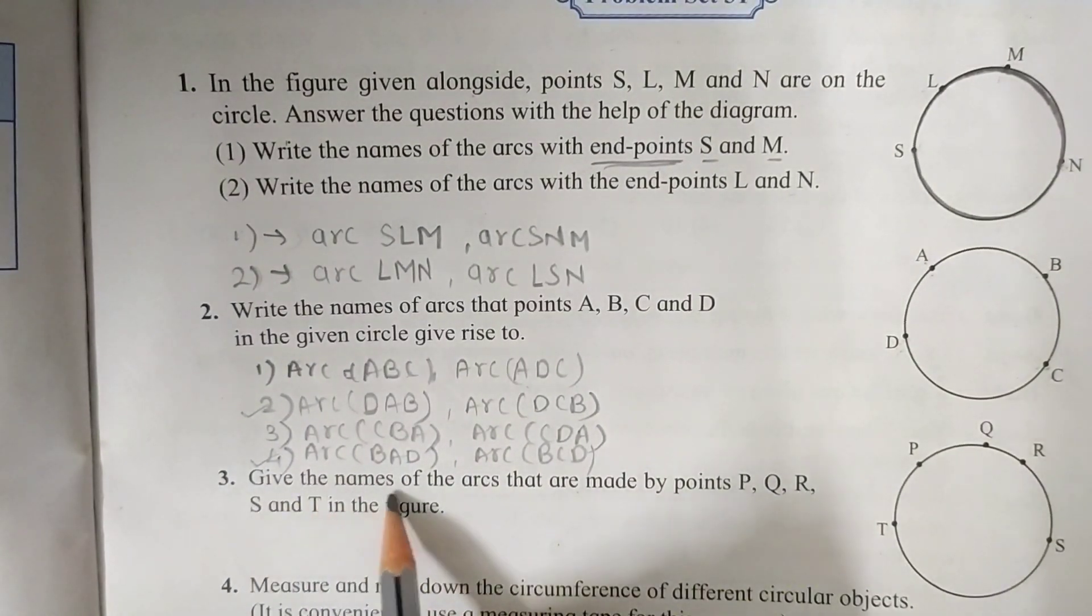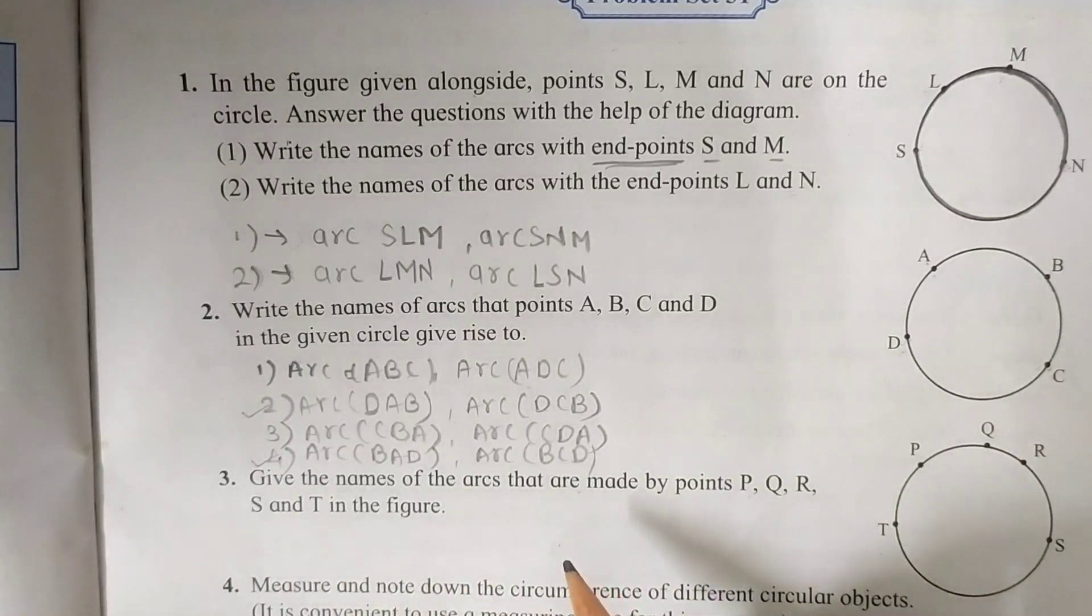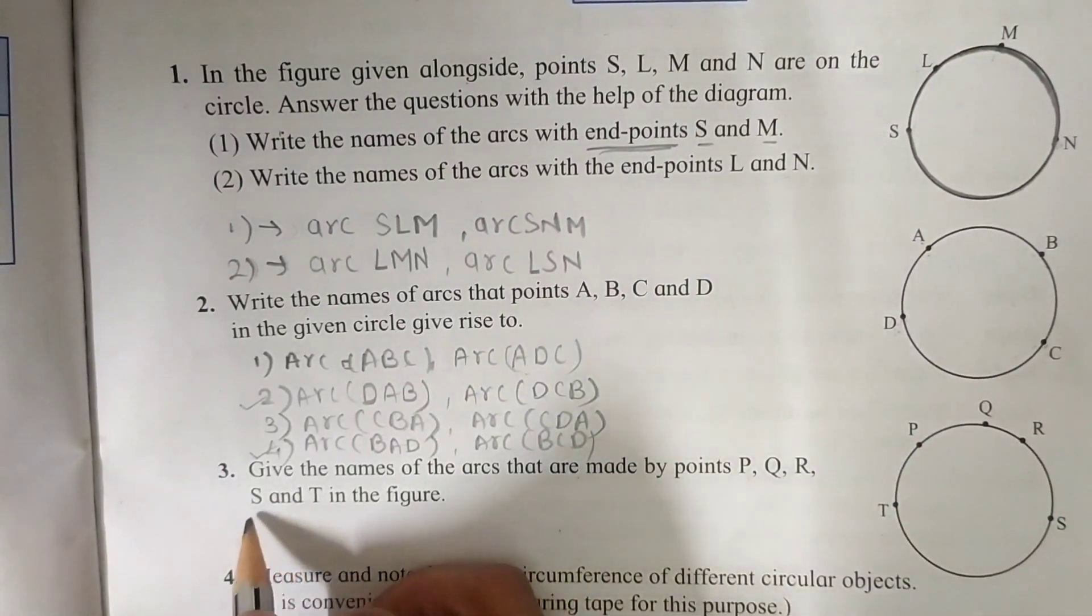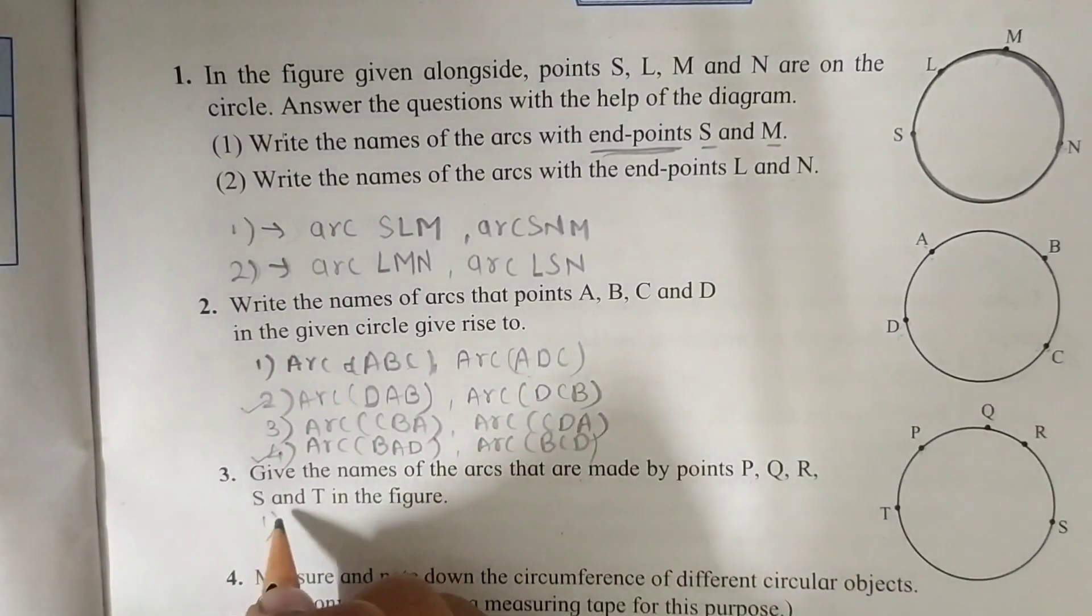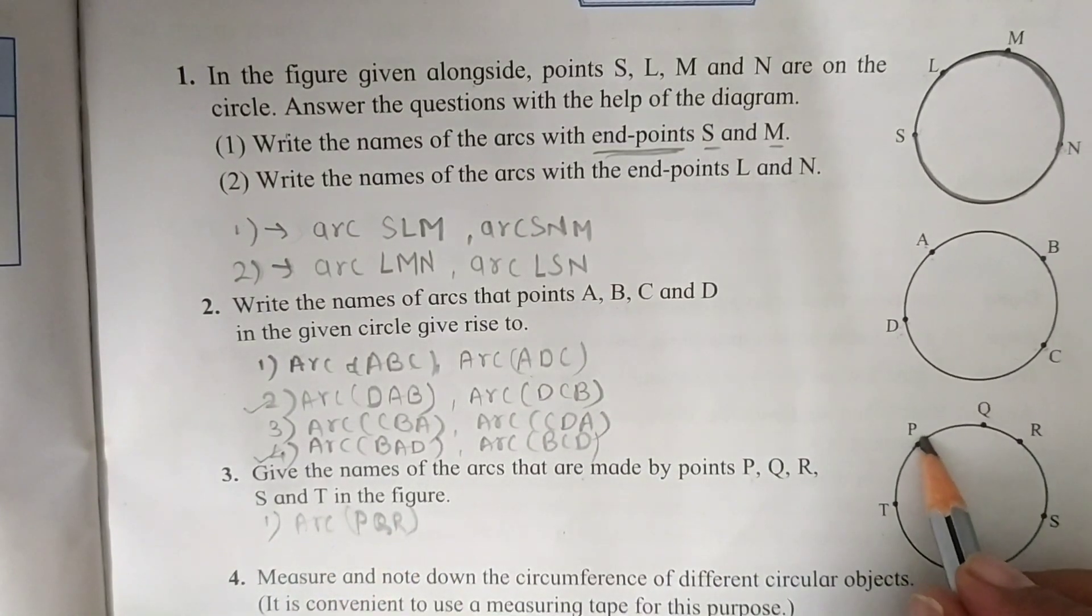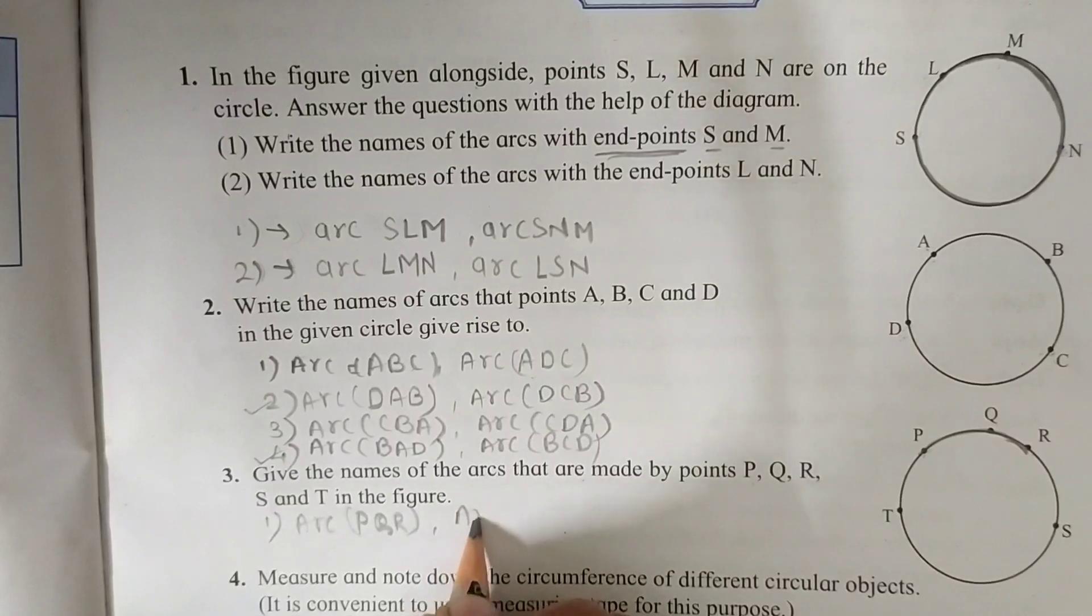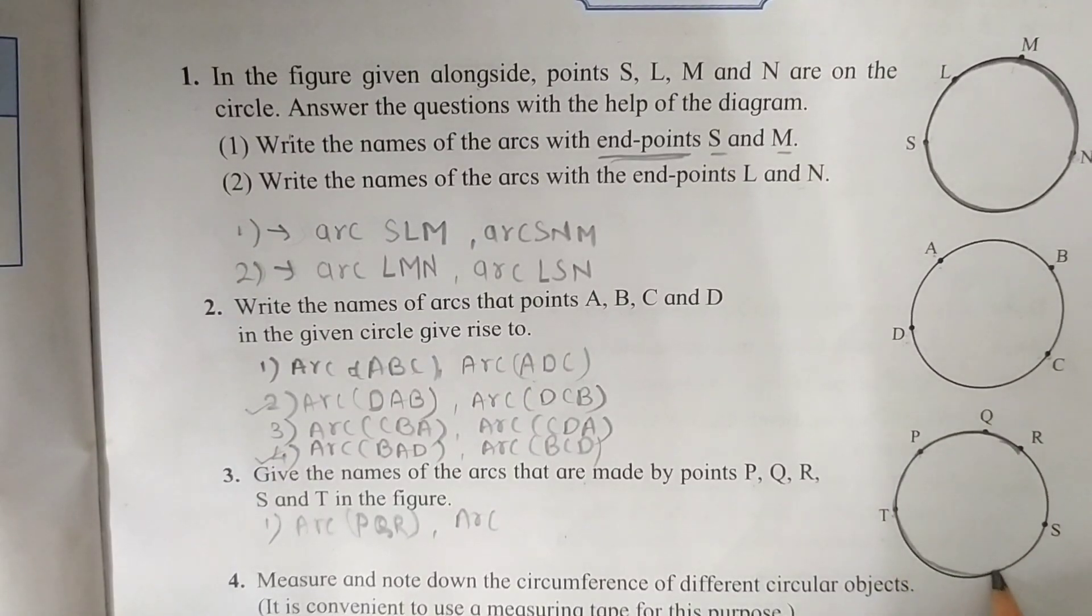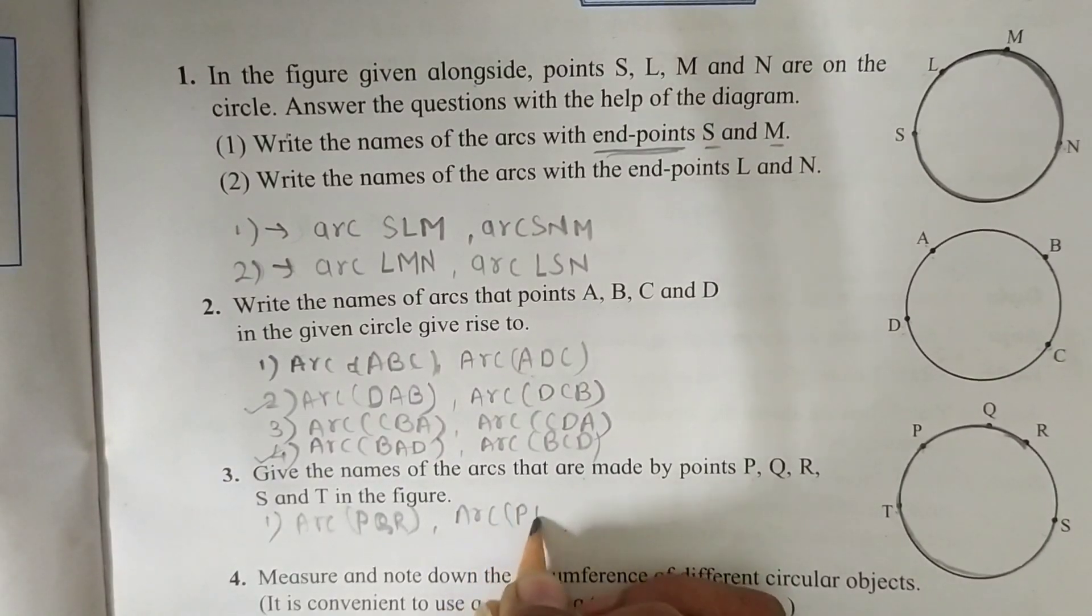Now third question. Give the names of the arcs that are made by points P, Q, R, S and T in the figure. We are going to solve it as question number two. Let's start from arc which has starting point P. Arc P, Q, R. This is arc P, Q, R. The second arc is arc P, T, S. This one P, T and S.